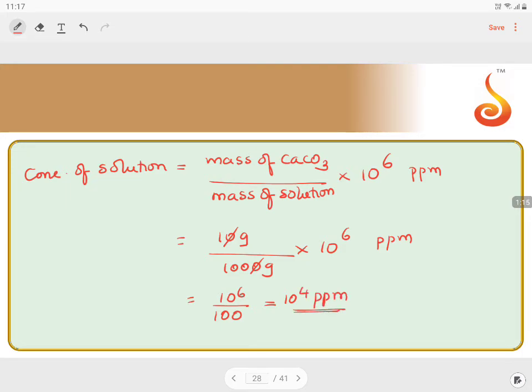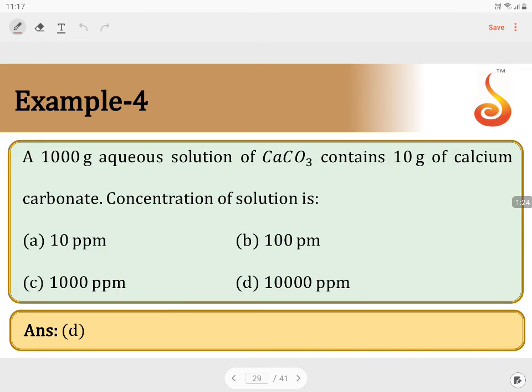10 to the power 4 ppm, that is 10,000 ppm. Where do we have 10,000 parts per million? We have it in option D. So the answer for this question is option D, 10,000 parts per million. Thank you.